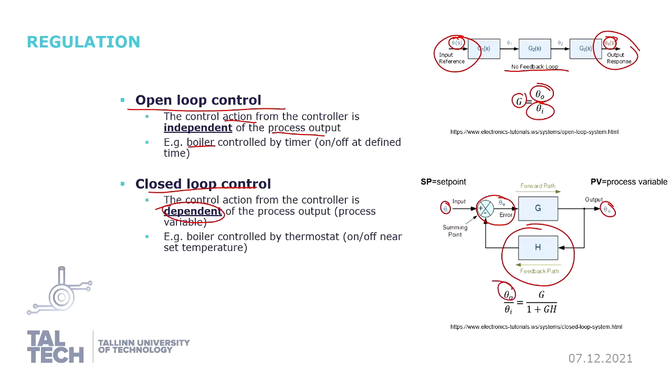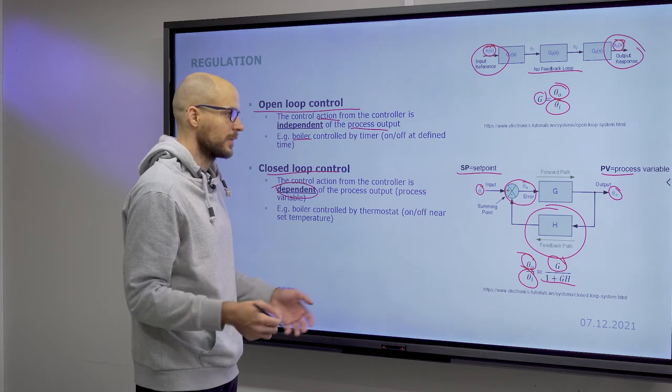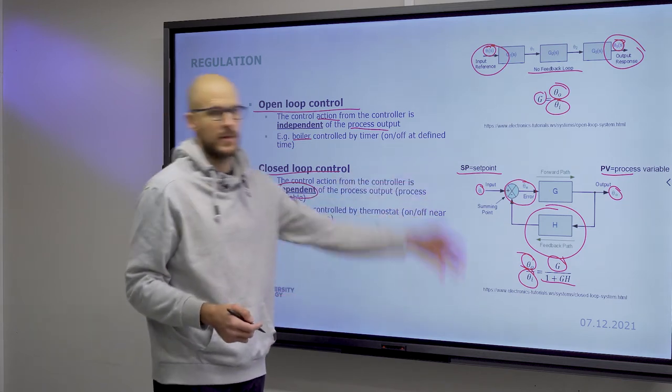But the fraction of output and input equals gain over one plus gain times the feedback. And just some terms. So setpoint is abbreviated as SP. And PV is abbreviated for process variable. Process variable being the thing you want to control. Setpoint being the target you want to reach.